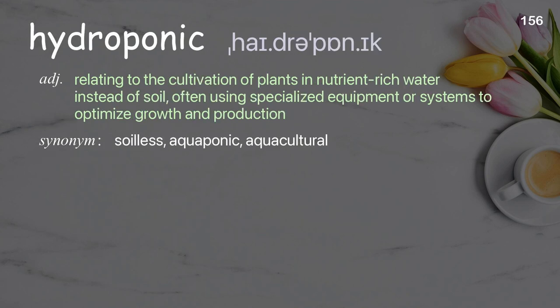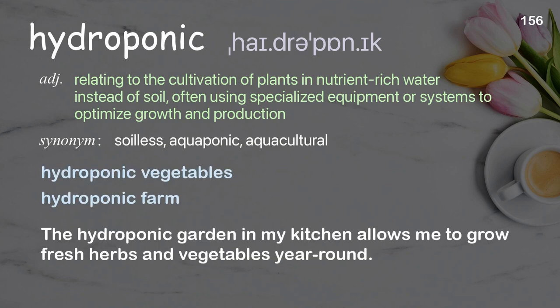Hydroponic: relating to the cultivation of plants in nutrient-rich water instead of soil, often using specialized equipment or systems to optimize growth and production. Examples: Hydroponic vegetables. Hydroponic farm. The hydroponic garden in my kitchen allows me to grow fresh herbs and vegetables year-round.